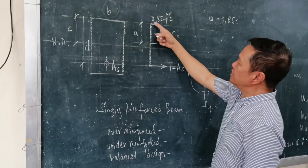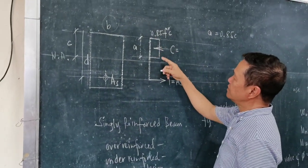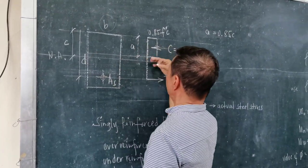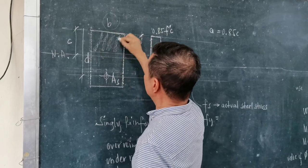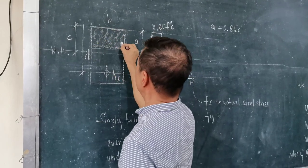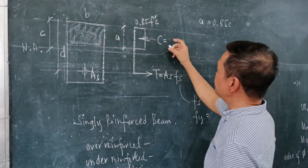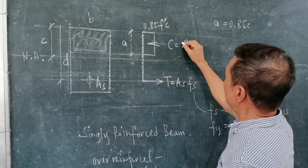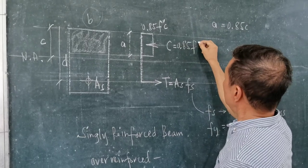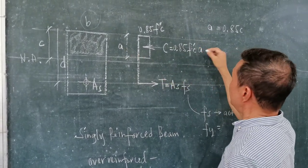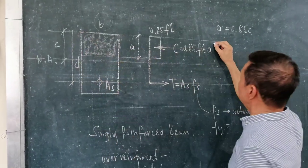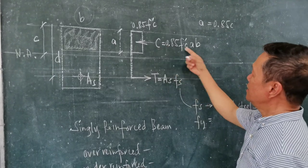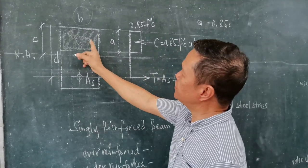And the compressive force, capital letter C, is acting on this area — the shaded area under compression. The compressive force is equal to 0.85 of F prime c times A times B. So that is equal to the compressive force capital letter C acting on this shaded area.